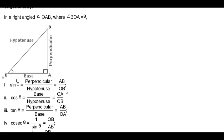Sin theta is nothing but perpendicular by hypotenuse. AB is the perpendicular and OB is the hypotenuse. Cos theta is base by hypotenuse — base is OA and hypotenuse is OB. Tan theta is perpendicular by base, so AB by OA.